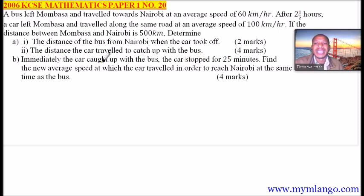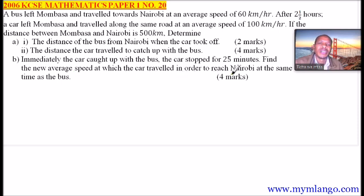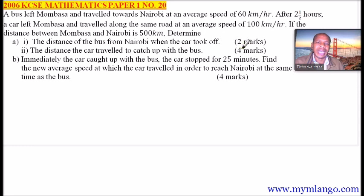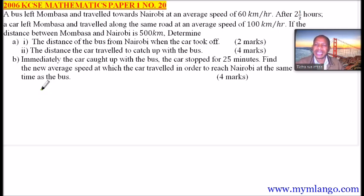Part B: immediately the car caught up with the bus, the car stopped for 25 minutes. Find the new average speed at which the car travelled in order to reach Nairobi at the same time as the bus. This is a section 2 question; it should add up to 10 marks. So we start with part A.